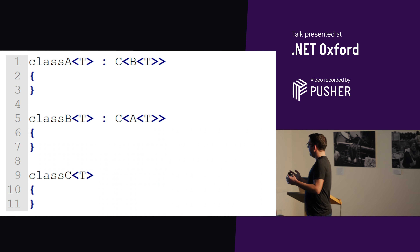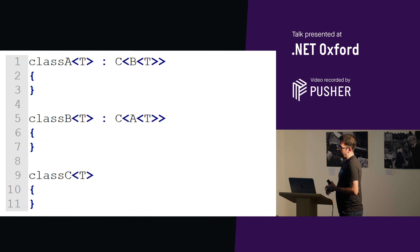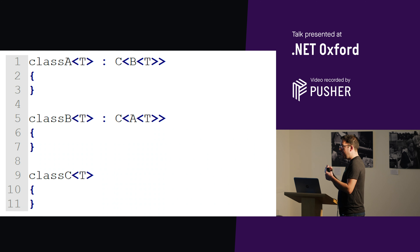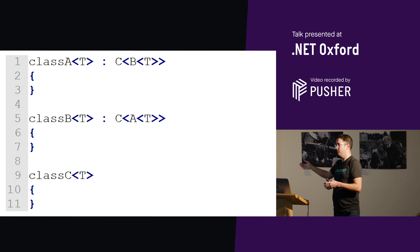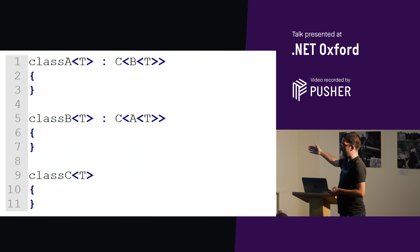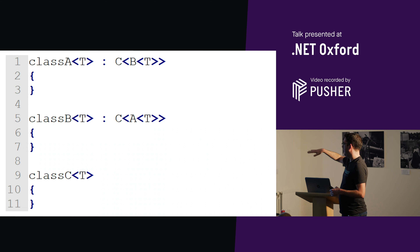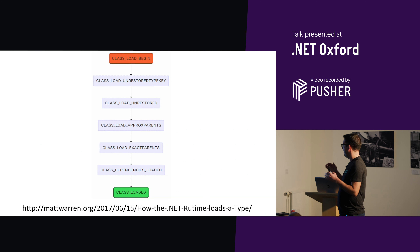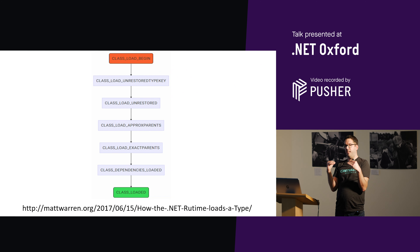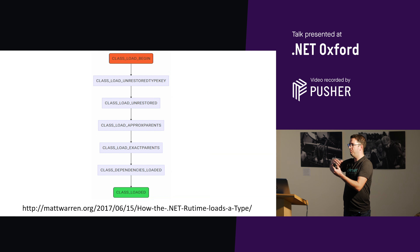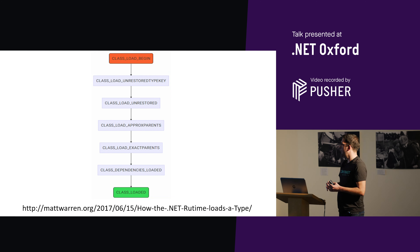The point is that these classes are all dependent on each other. A shouldn't load if B is broken because B is generic in A, and B shouldn't load if A is broken. You can't load one without the other — they should only both load if they're both okay. It's a bit like database transactions: you run everything, and at the point when you know everything is okay, you flip a bit and say the transaction is done. The runtime works through these stages — loading all classes at the first level, then all classes at the second level — because it can't fully load a type until it knows all its dependent types are okay.